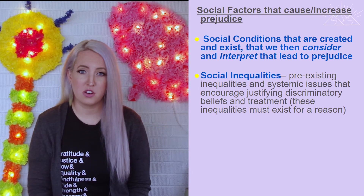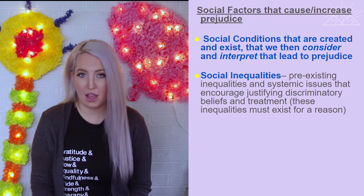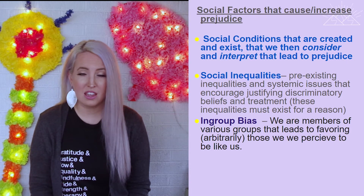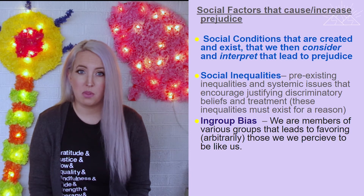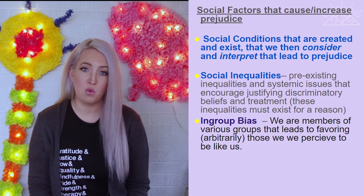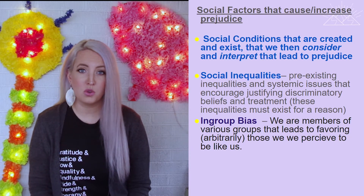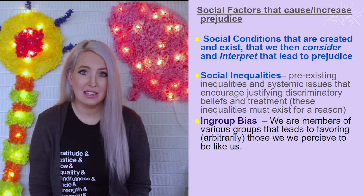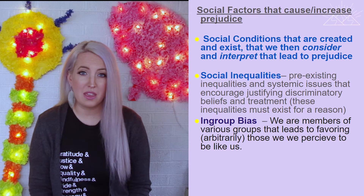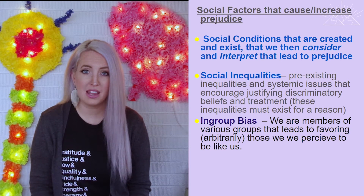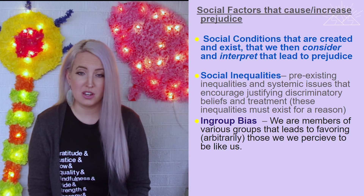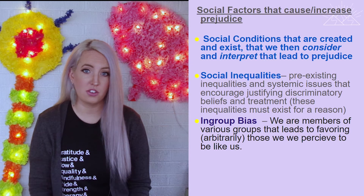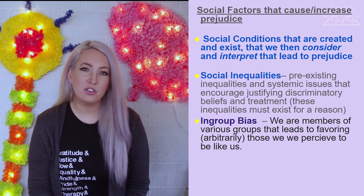Another social factor that increases prejudice is known as in-group bias. We are all members of different groups in our society, created based on things like race and ethnicity, culture, and even organizations and clubs we belong to. There are certain people we relate to and see as like us, and others we see as not like us. This creates in-group bias, where we view those similar to us more favorably — sometimes a positive prejudice based on shared group membership.